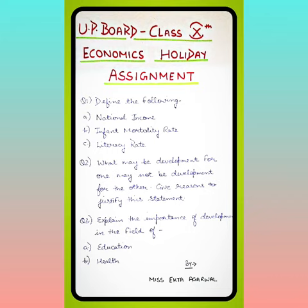Question number 1: Define the following. One by one you have to define all these three things. A. National Income, B. Infant Mortality Rate, C. Literacy Rate.